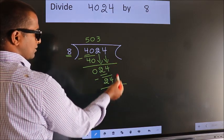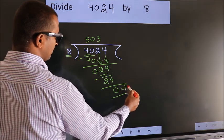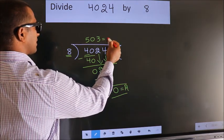No more numbers to bring it down. So we stop here. This is our remainder. This is our quotient.